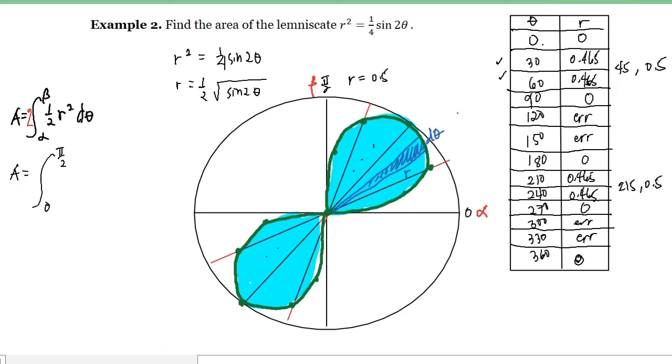So we'll just have r squared and d theta. Now, what is the value of r squared? From here, our r squared is one-fourth sine of 2 theta. So we have here one-fourth. I'll just factor out one-fourth because it's constant. And this is sine of 2 theta, and we have here d theta.